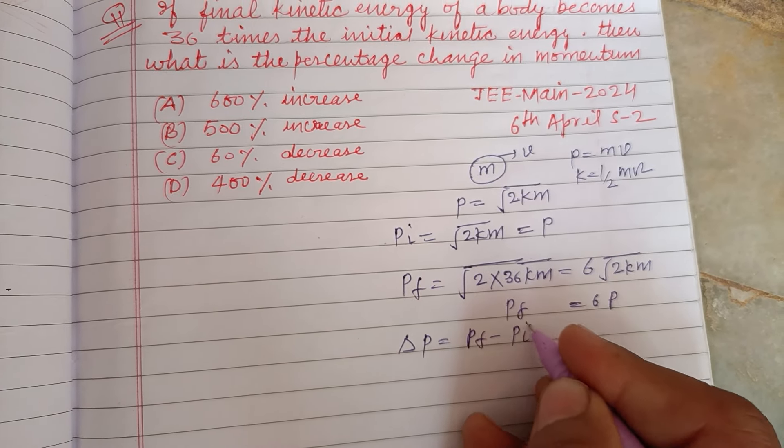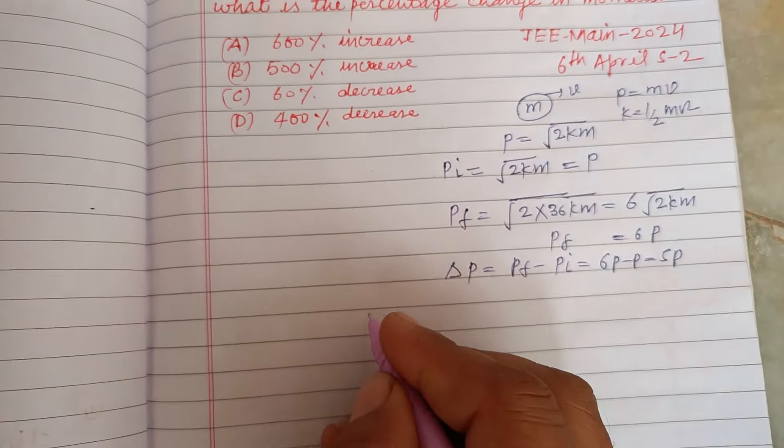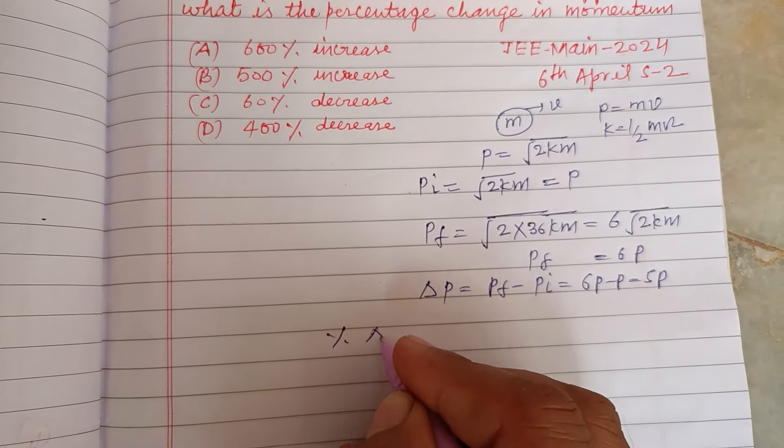equals P final minus P initial, which is 6P minus P. This is 5P. Therefore, percentage change